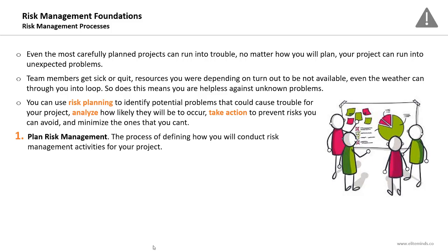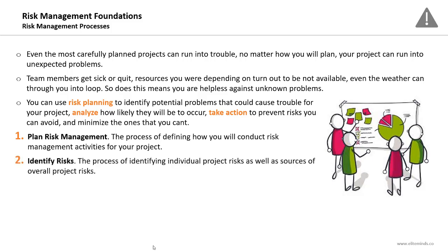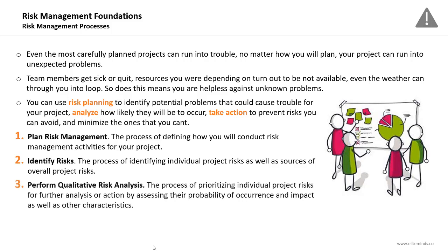The seven risk management processes we will cover in detail start with: Plan Risk Management — the process of defining how you will conduct risk management activities for your project; it's about thinking in advance. Identify Risks — the process of identifying both individual project risks and sources of overall project risk. Perform Qualitative Risk Analysis — the process of prioritizing individual project risks by assessing their probability of occurrence, impact, and other characteristics. Qualitative analysis is primarily about prioritization.